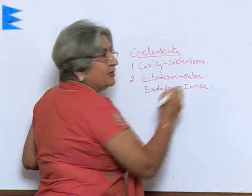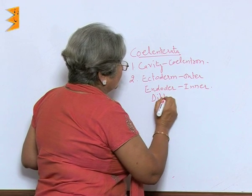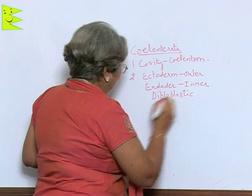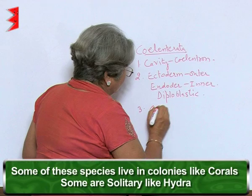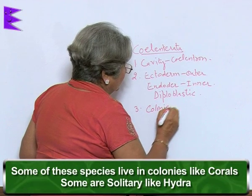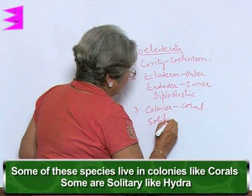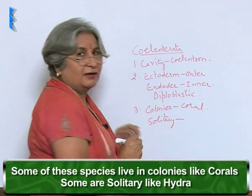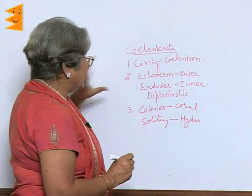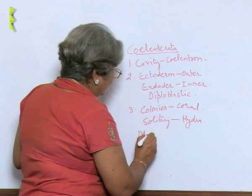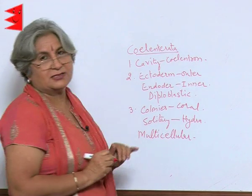These are the two germinal layers and such animals are called diploblastic. Some of these animals form colonies, like coral, while some are solitary, like hydra. These organisms are multicellular and diploblastic.